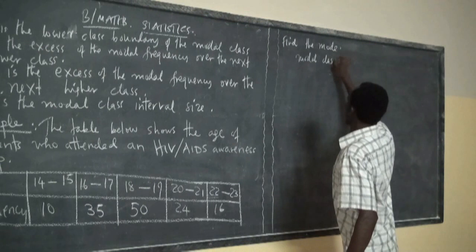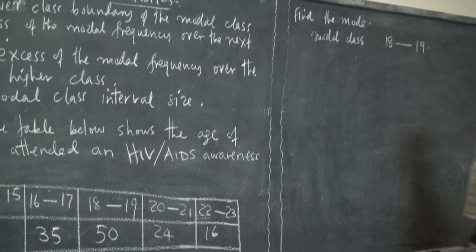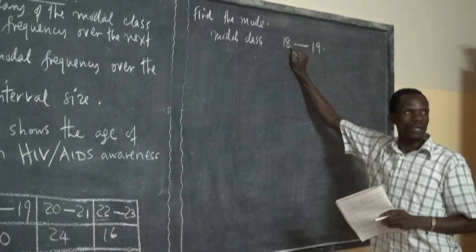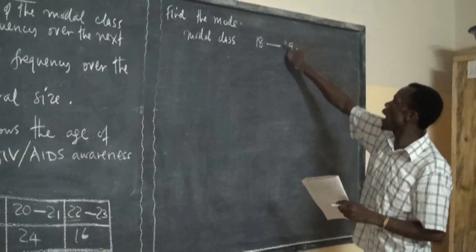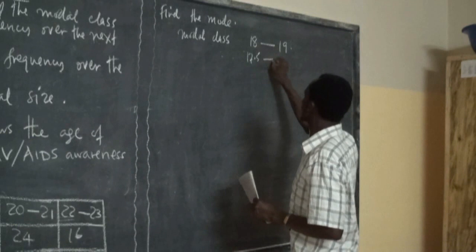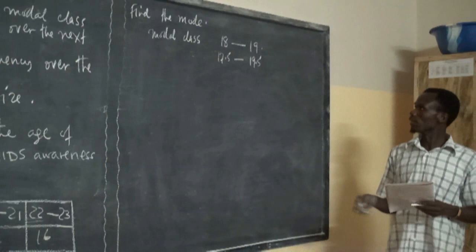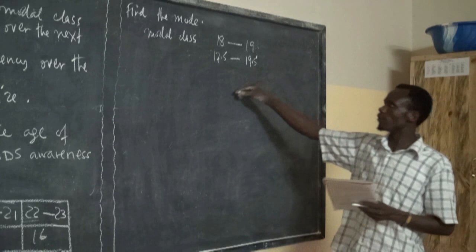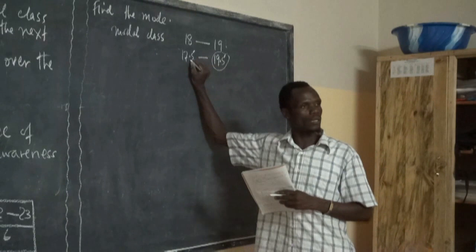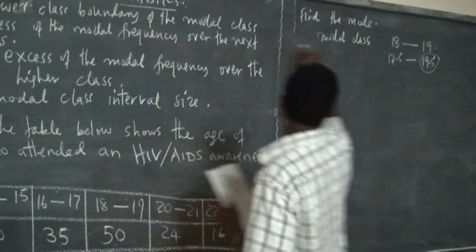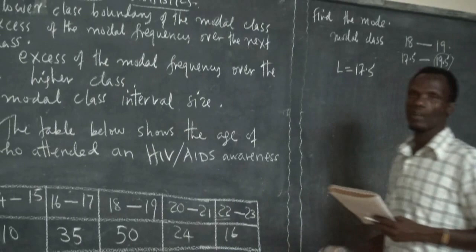We call 18 to 19 the modal class. Now we identify the upper and lower class boundaries. The lower class boundary is 17.5 and the upper class boundary is 19.5 — so we have 17.5 to 19.5. Our focus now is the lower class boundary, which is L. So L = 17.5.